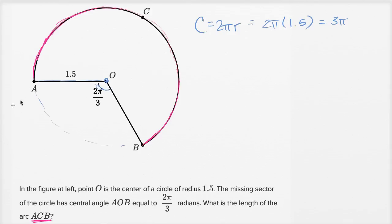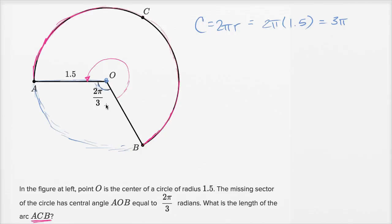There are a couple of ways you could do it. You could figure out the length of the missing arc and subtract that from the circumference, and then you'd be left with the magenta part. Or we could figure out the central angle of the magenta part and think about what fraction that is going all the way around. Thinking in radians, going all the way around is two pi radians — so what fraction is this angle of two pi?